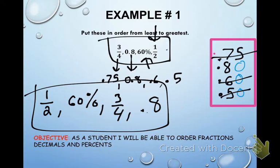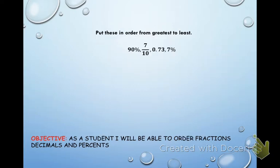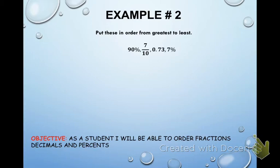Example number two. We have 90%, seven-tenths, 73/100, and 7%. We're going to change them all to decimals. For a percent to decimal, take the percent off and move the decimal two places to the left, giving us 0.90 for 90%.